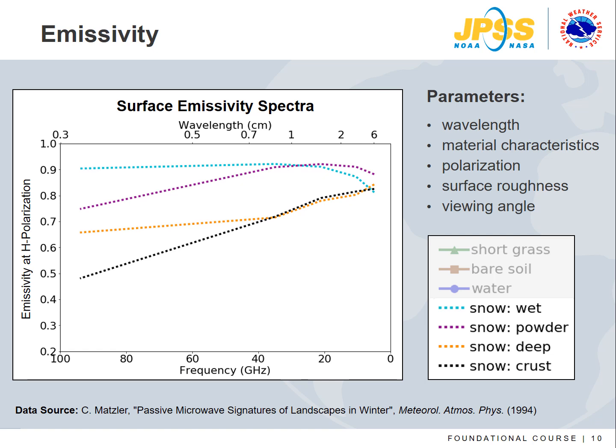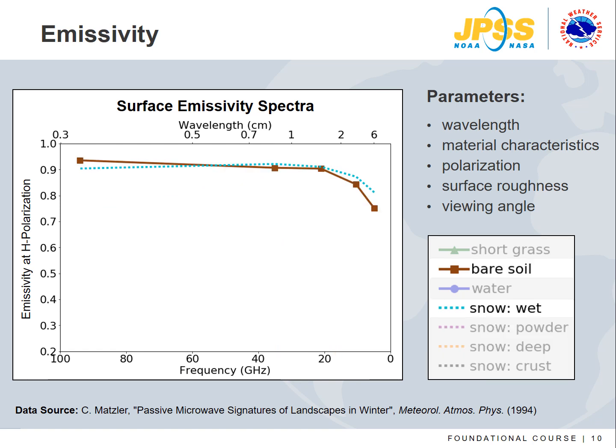Wet melting snow has a larger emissivity than dry snow. The 37 GHz channel is often used to distinguish bare ground from snow and compared to the 19 GHz channel for snowpack characteristics. The emissivity curve for wet snow is similar to bare soil, which presents a challenge — wet snow interpreted as bare soil can cause an underestimation of snow depth if prior information is not taken into account.